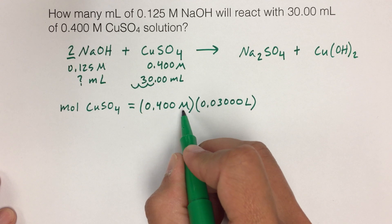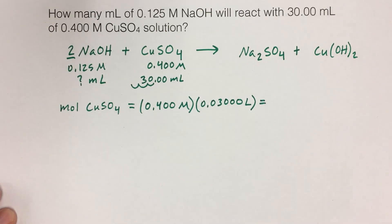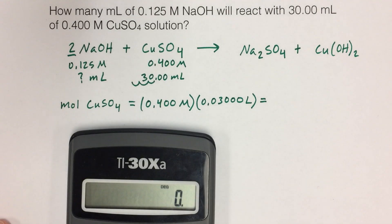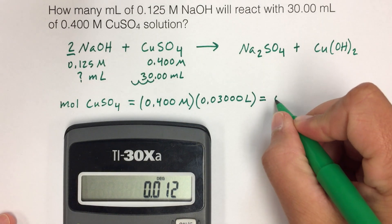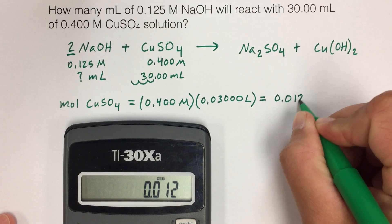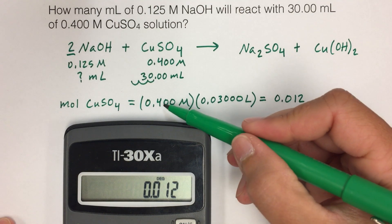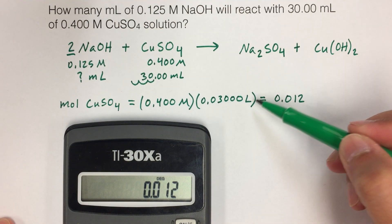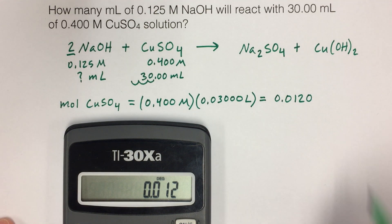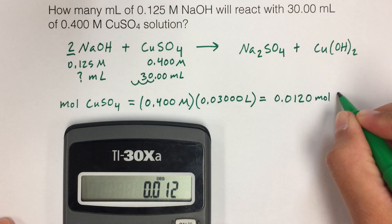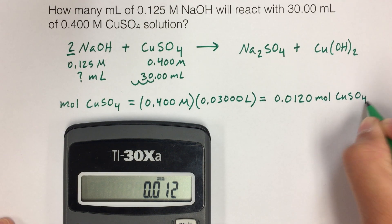Okay, so if you do capital M, moles per liter, moles divided by liter, times liter, is going to give us moles. So we'll do that. And we get this number, 0.012. But let's think about sig figs. Three sig figs, four sig figs. We should have three here, so we need to add a zero. That is our moles of copper 2 sulfate. That was task one.